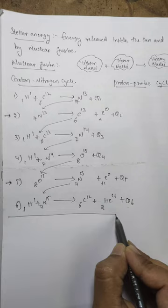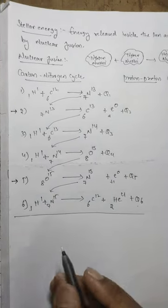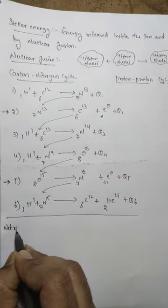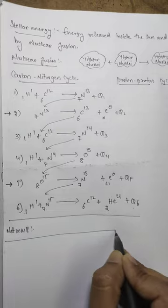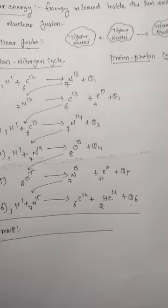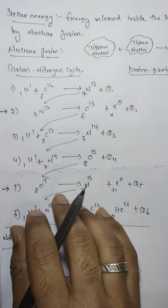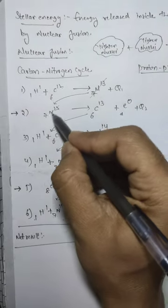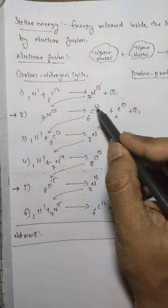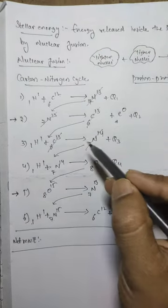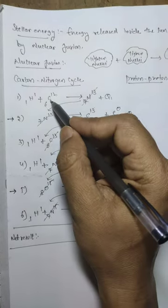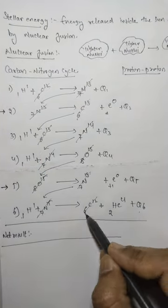Now we have to write the net result after combining all these steps. We cancel all common atoms present on either side of the balanced equations. Cancelling 7N13, 6C12, 7N14, 8O15, 7N15, and the final 6C12, we eliminate all the intermediate atoms from both sides.